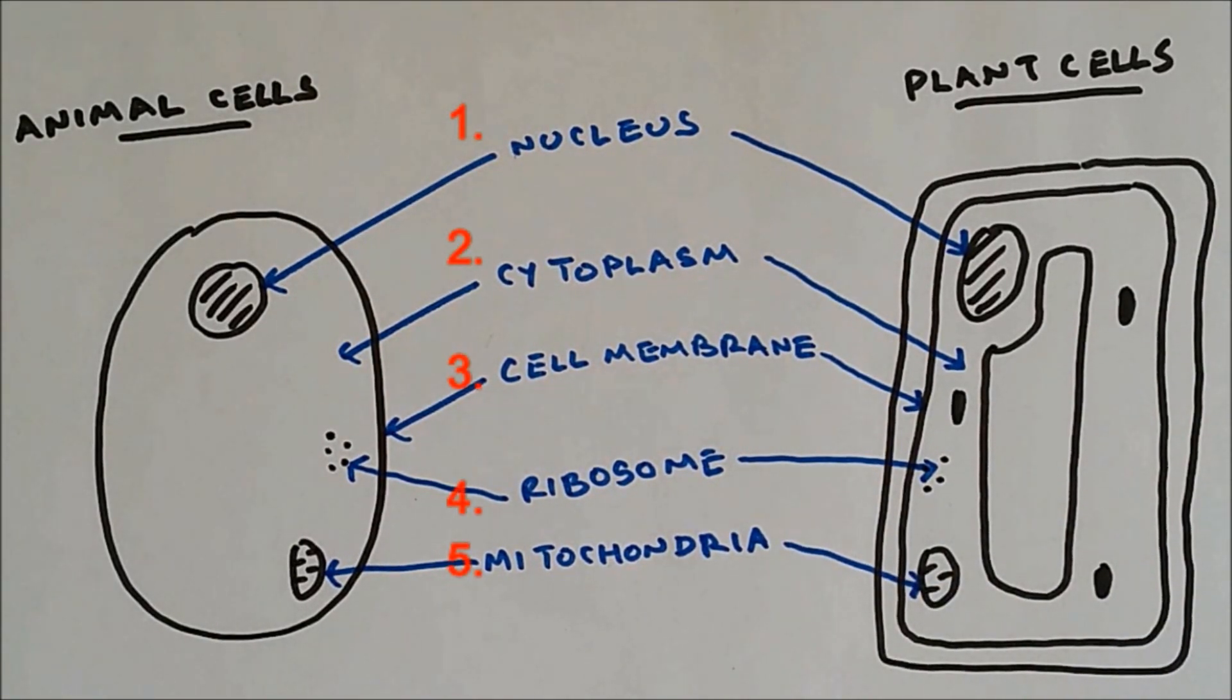You can see that five parts are found in both animal cells and plant cells. So let's take a look at the extra parts which are found in plant cells.